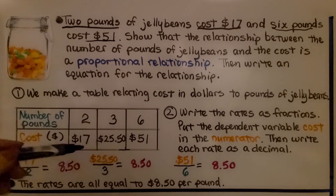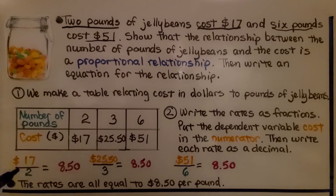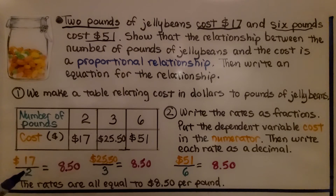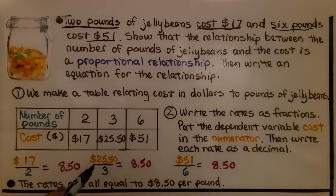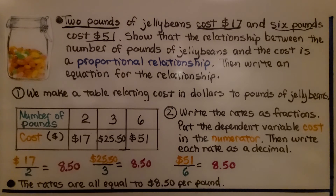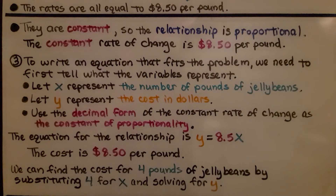We can also figure out the cost for three pounds — it would be $25.50. We write the rates as fractions, putting the dependent variable cost in the numerator and pounds in the denominator. $17 divided by 2 is $8.50. For three pounds it's also $8.50, and for six pounds it's also $8.50. Since all rates equal $8.50 per pound, they are constant, so the relationship is proportional.